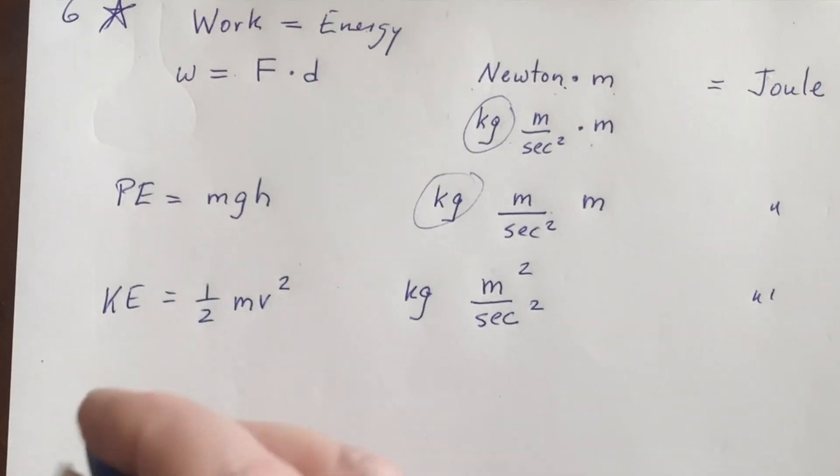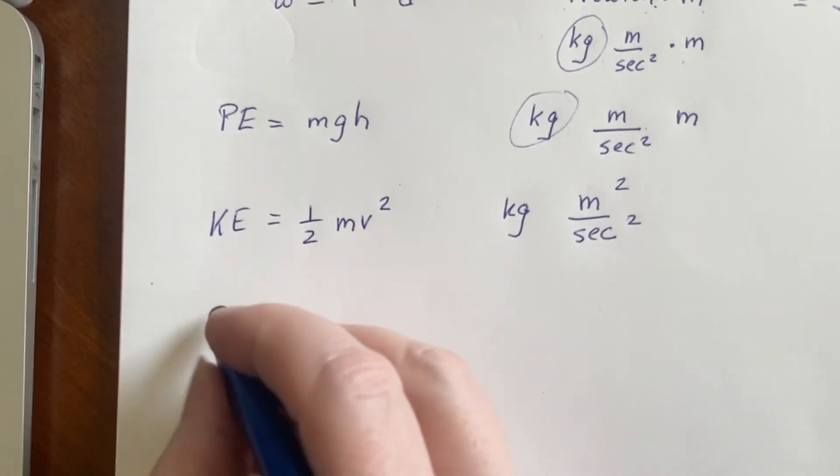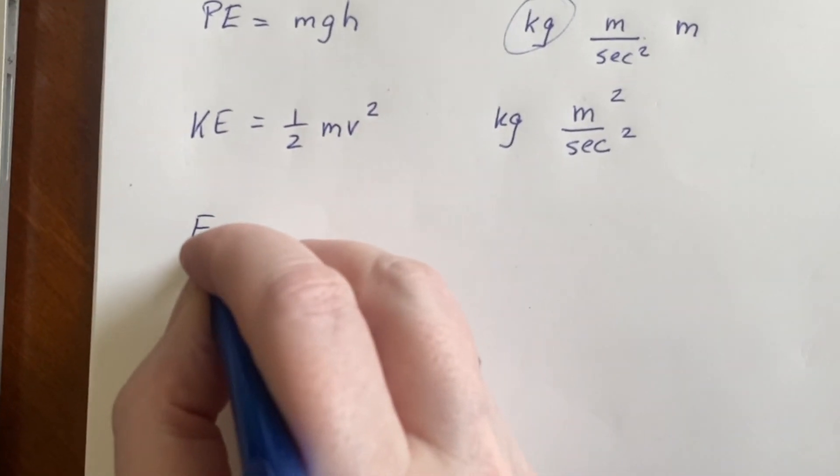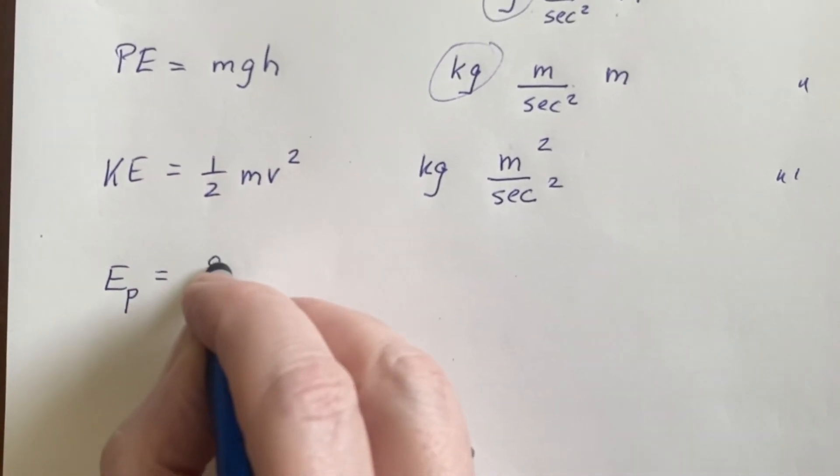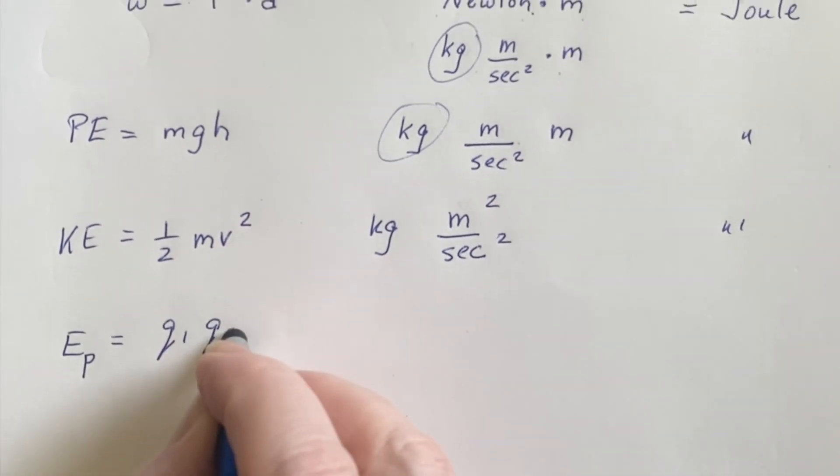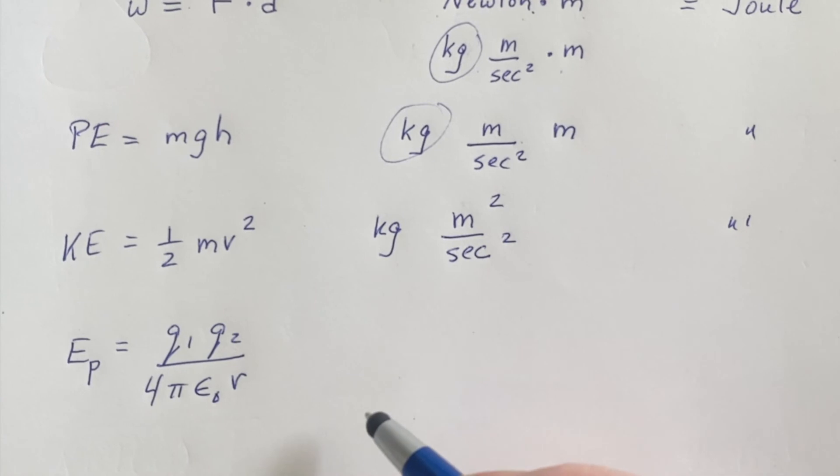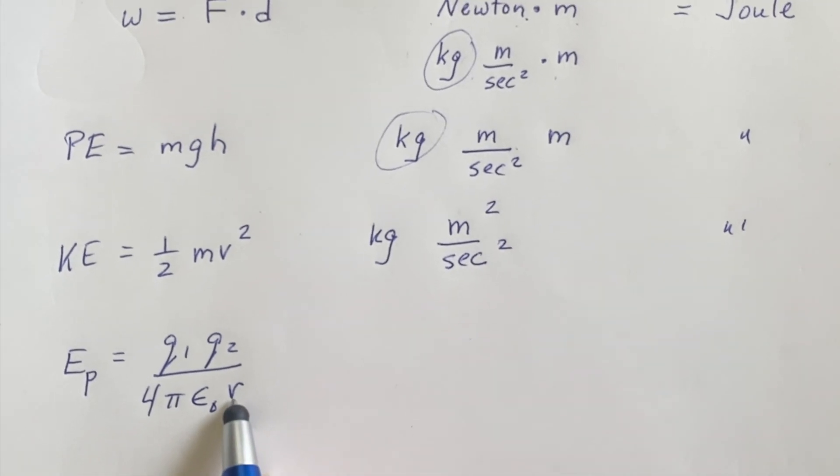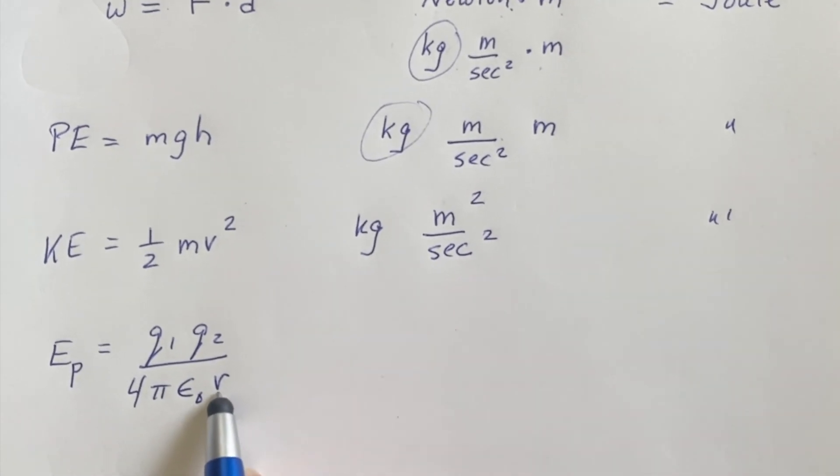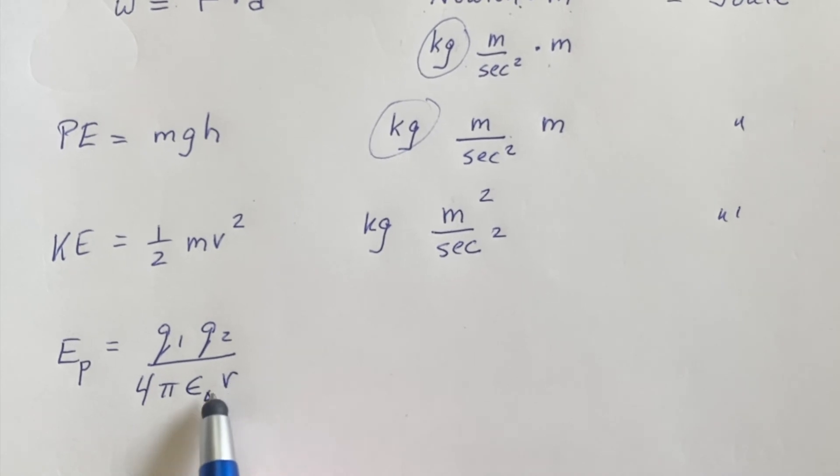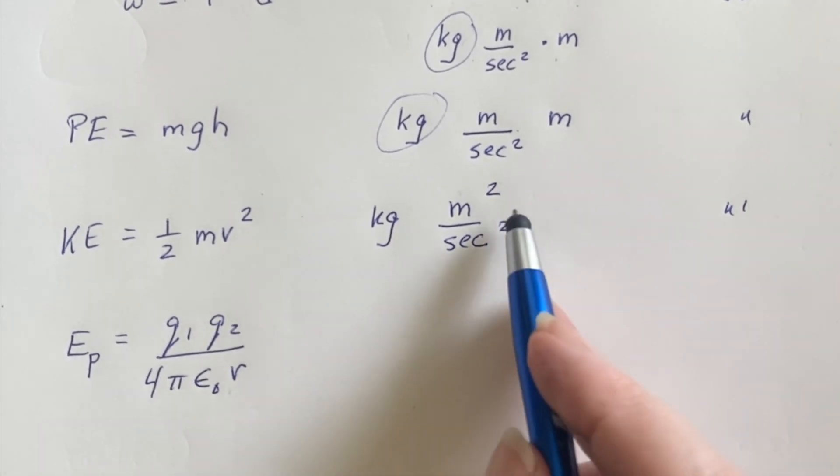Now what about this strange one that we came up with that was based on these charges? What is all of that? That's really freaking scary and the only thing that I recognize is a meter because a radius would be a distance and that would be a meter, but it's on the bottom, it's not even on the top. What is going on here?